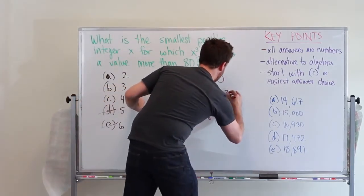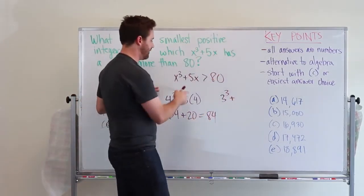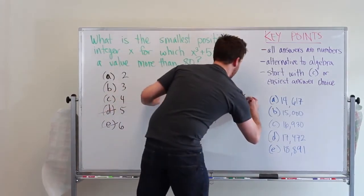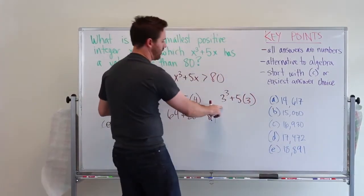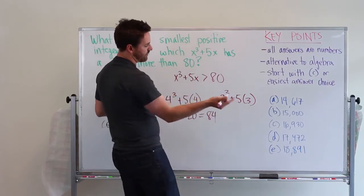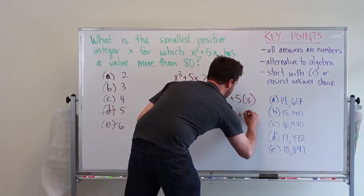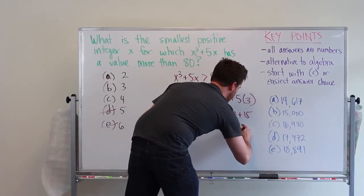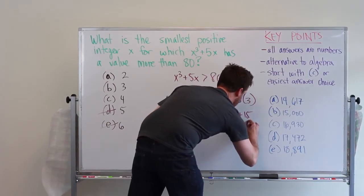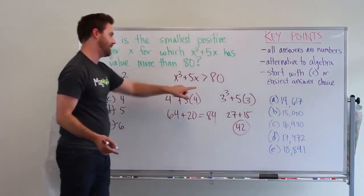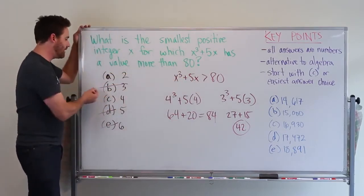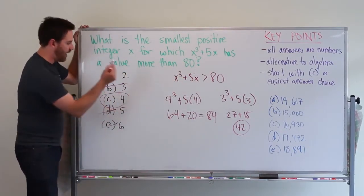So we'll do 3³ + 5 × 3. So 3³ is, or 3² is 9 times 3 is 27, plus 15. That gives me 42. Okay, so that's not even close to 80. So I know B is not the right answer, and I will choose C.